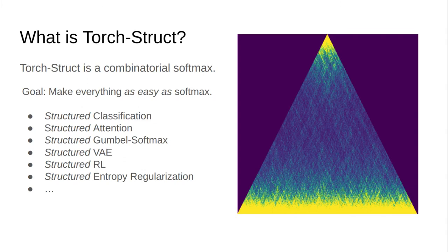So to summarize: what is TorchStruct? TorchStruct is the missing combinatorial softmax operator for PyTorch. The goal of the library is to make everything as easy to use as softmax, allowing us to build algorithms for structured classification, structured attention, structured stochastic algorithms like Gumbel softmax and variational autoencoders, and structured forms of regularization such as entropy regularization.